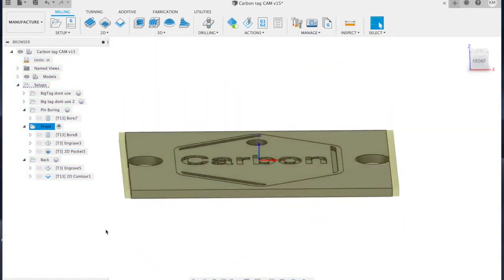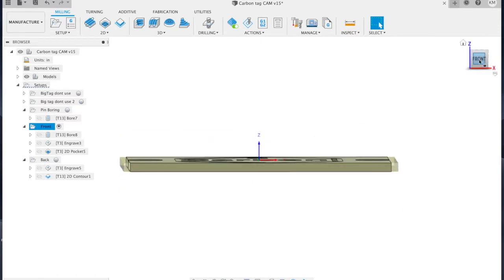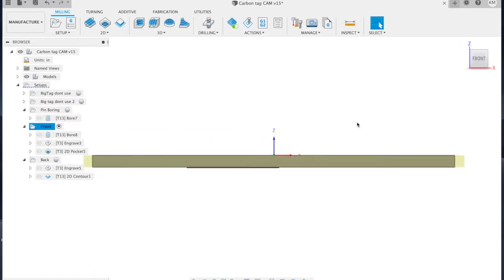Now, it's important to note that for all the front side operations, we use a center zero reference point that is the center of the top of the stock.